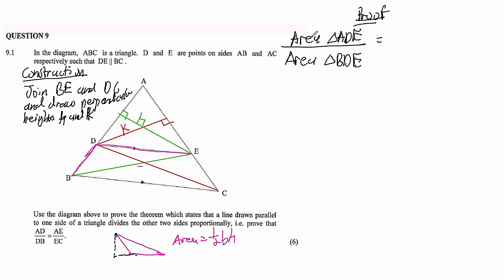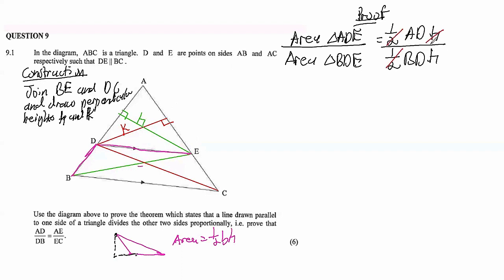So the area of triangle ADE over the area of triangle BDE equals (½ × AD × h) over (½ × BD × h). The half and half cancel, and h and h cancel, leaving us with AD over BD.